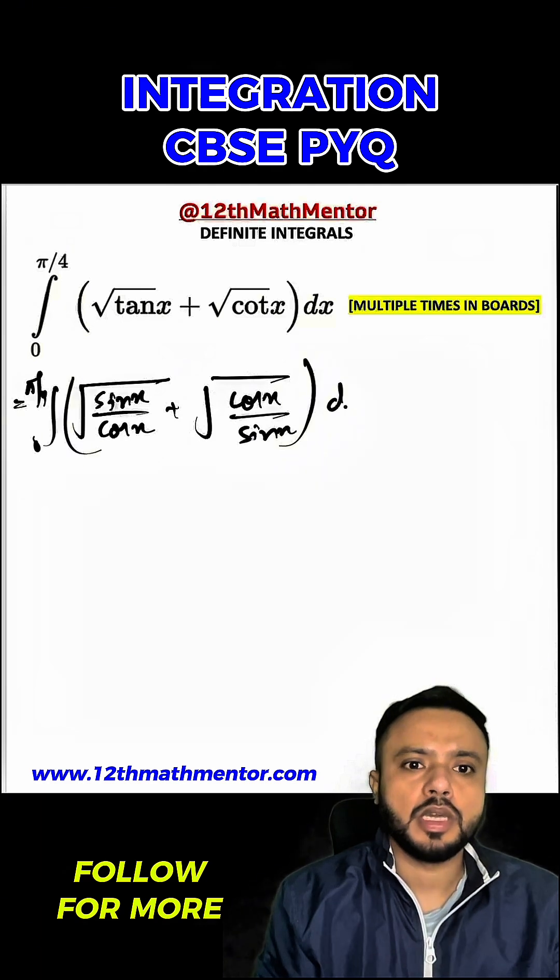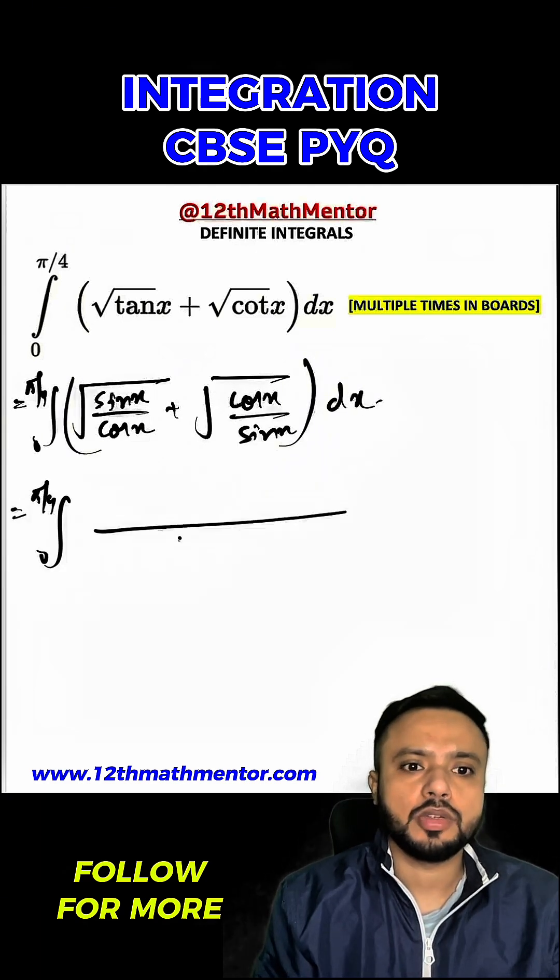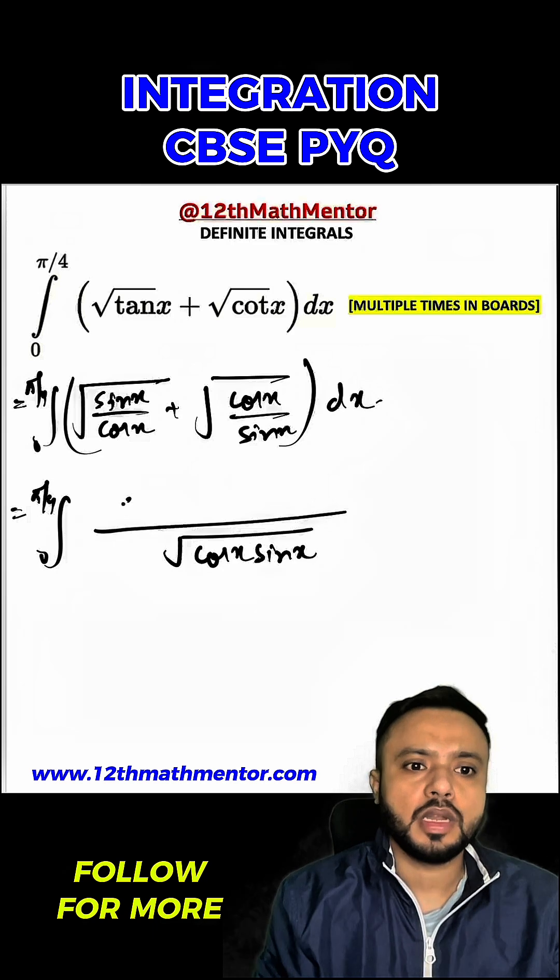So 0 to pi by 4. Now I'm going to take LCM in the denominator. It would be root of cos x sine x, and here I'll be left with sine x plus cos x dx.